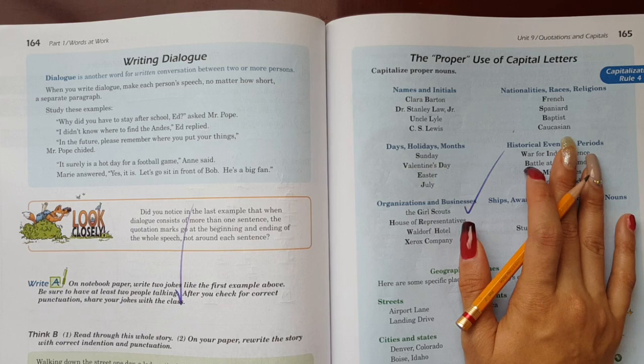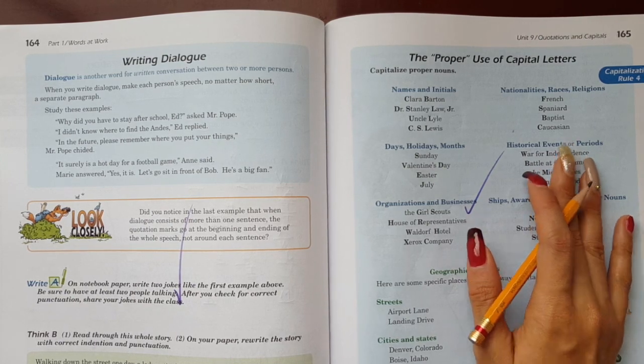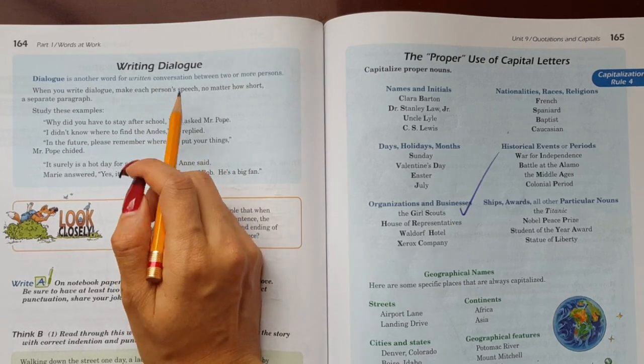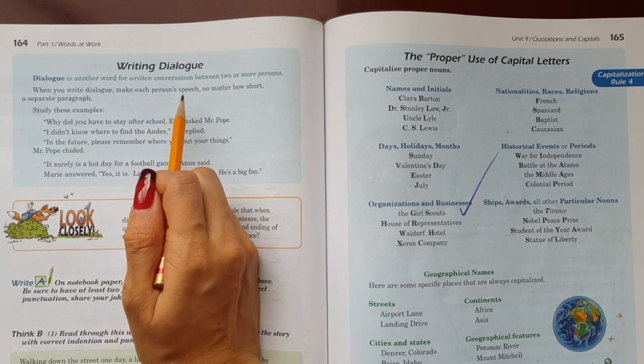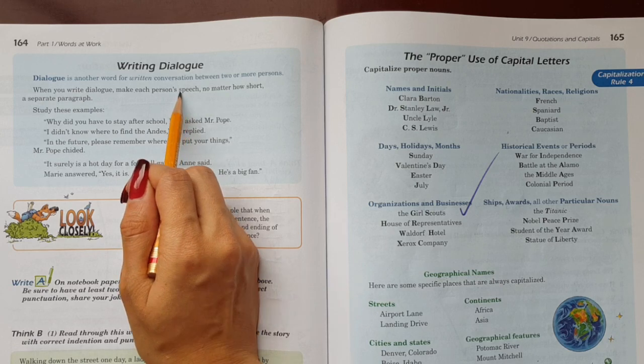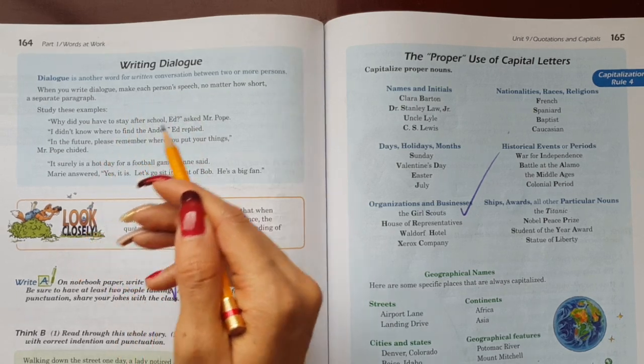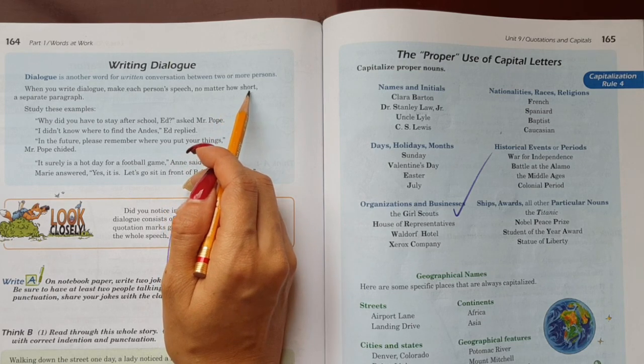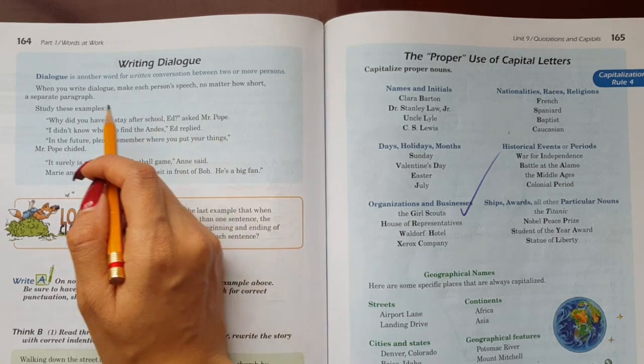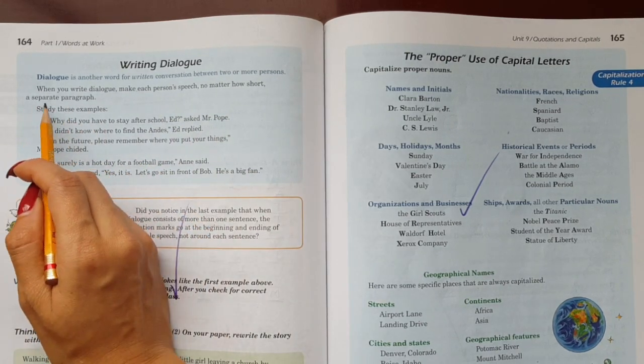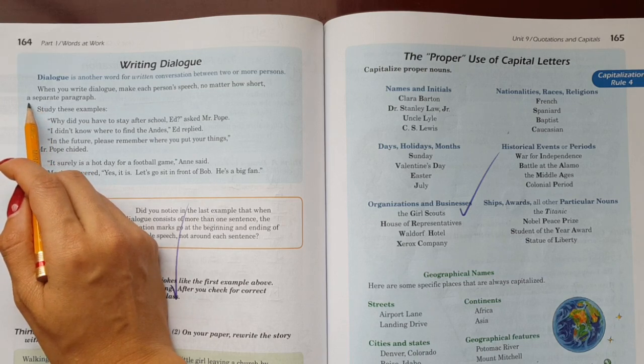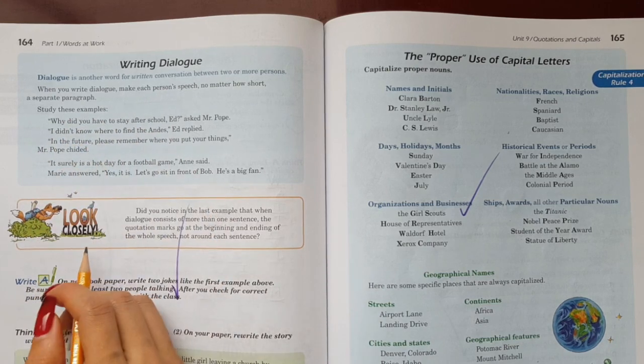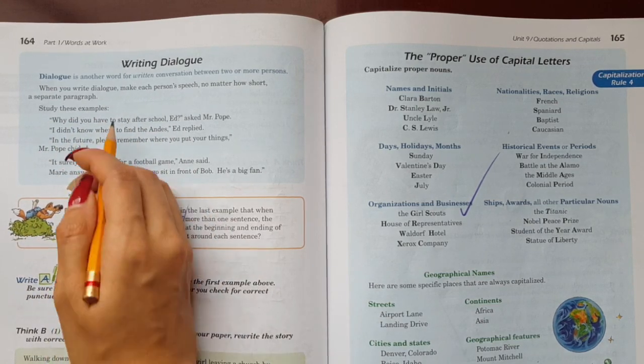So here we are being told, let's say, to be careful when I'm going to write a dialogue. It says when you write a dialogue, make sure to give each person the speech. What each person is going to say, it doesn't matter how long, how short, or of a paragraph, it doesn't matter how extensive or not it is. Look at these examples.